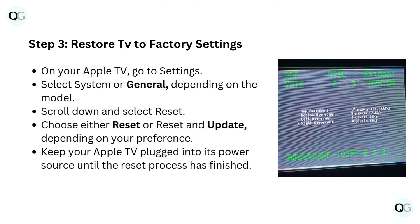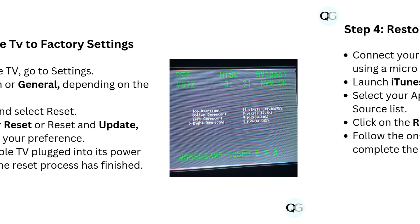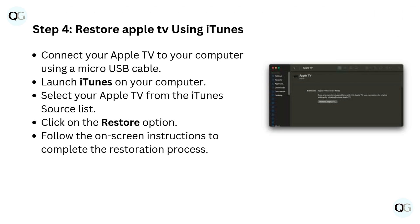Step 3: Restore TV to factory settings. On your Apple TV, go to Settings. Select System or General, depending on the model. Scroll down and select Reset. Choose either Reset or Reset and Update, depending on your preference. Keep your Apple TV plugged into its power source until the reset process has finished.